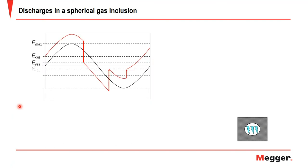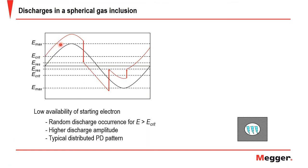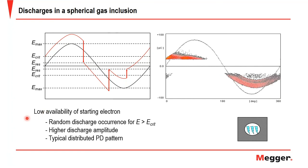In contrast, with low availability of starting electrons — only the ionization process of natural radioactivity — there is a random discharge occurrence whenever the local field exceeds the critical field. Rather than dropping to the residual field, the critical field keeps increasing until breakdown occurs, producing much higher magnitude pulses. The typical PRPD pattern for such a case shows higher amplitude due to this lower availability of starting electrons.